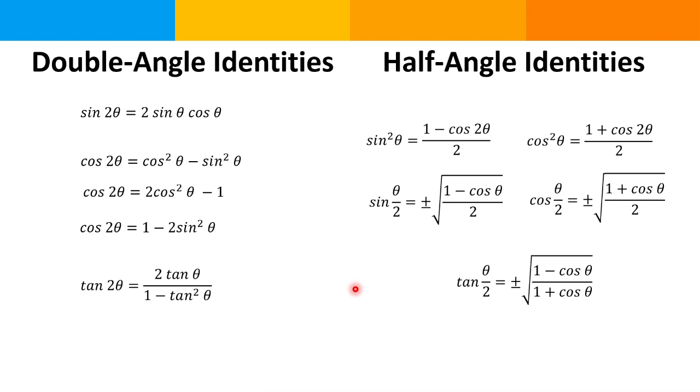We're going to find the exact value of a given trigonometric function using double angle identities and half angle identities.